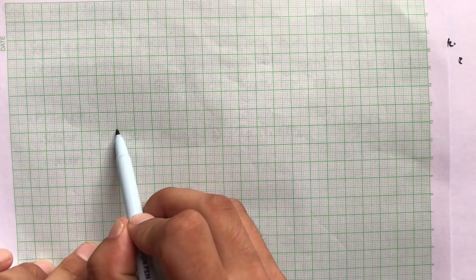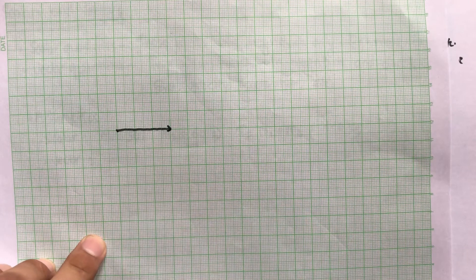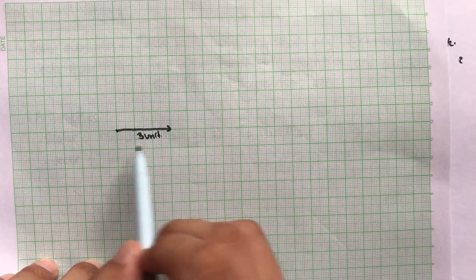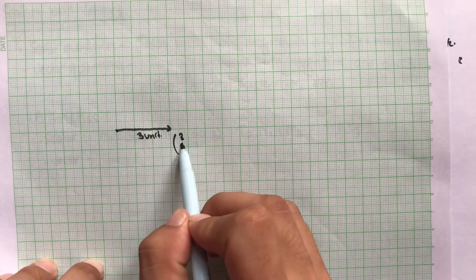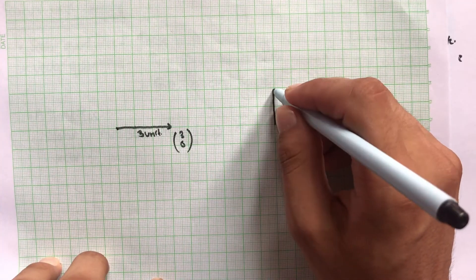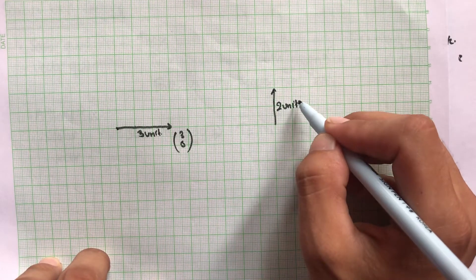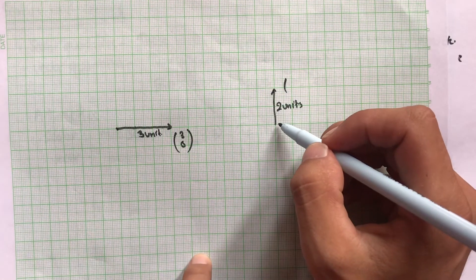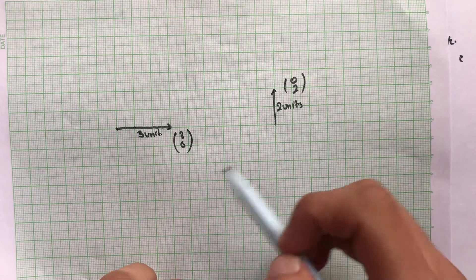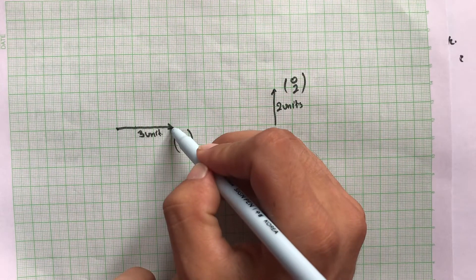Let's say this is my origin. I have a vector in this direction with a magnitude of three units — I can represent this vector by writing (3, 0). I have another vector with magnitude two units, represented as (0, 2). Here I have two vectors and I would like to find their sum. So what I'm going to do is move this vector from here to here.